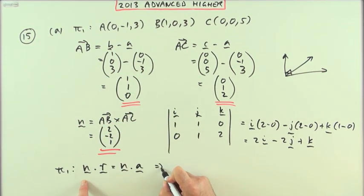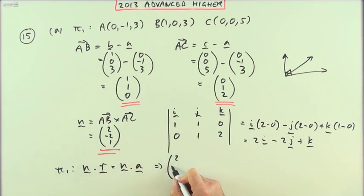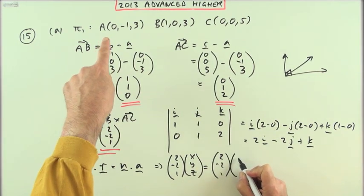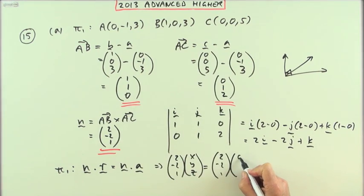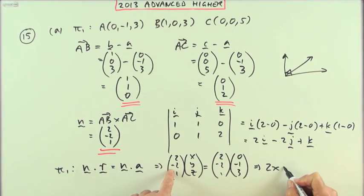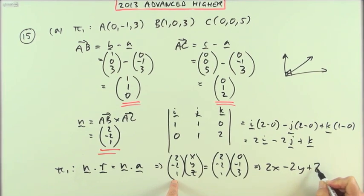That says I've got (2,-2,1) times any point will give the same answer as (2,-2,1) times the specific point A. So I've got 2x minus 2y plus z equals—that's zero, that's a two, that's a three—that comes to five.